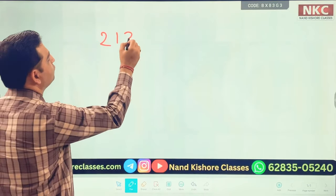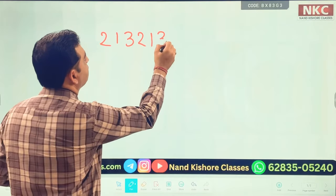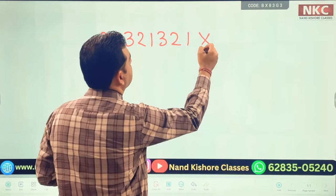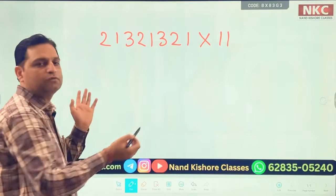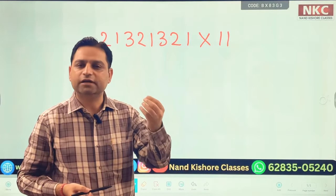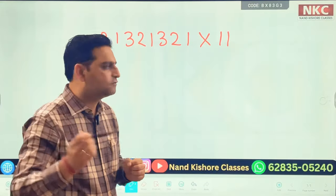Let's suppose you have this number 2132132 multiply by 11. This is a very big number you want to multiply. Using this rule, it is very easy to do. Let us start doing.